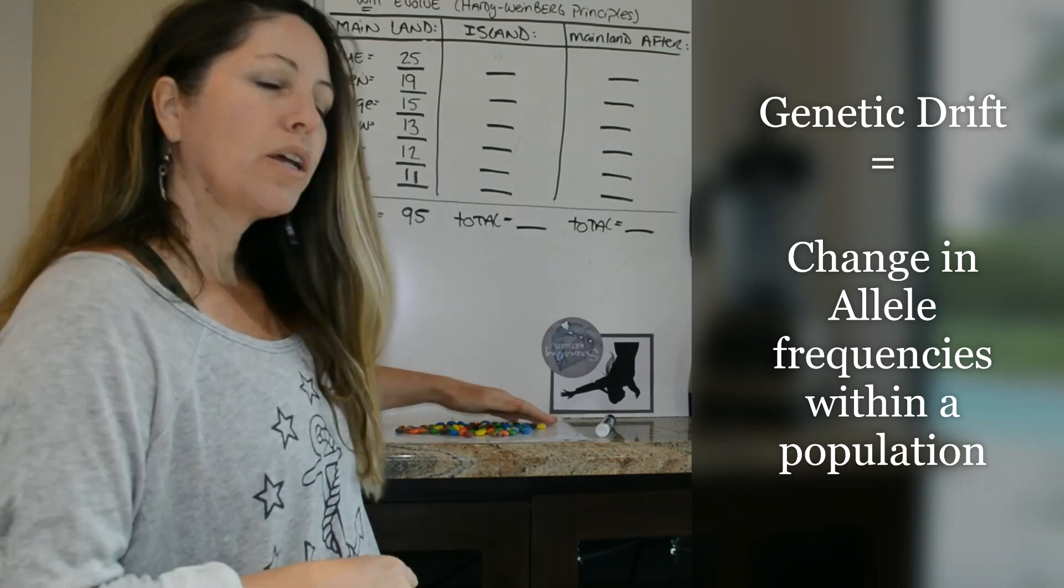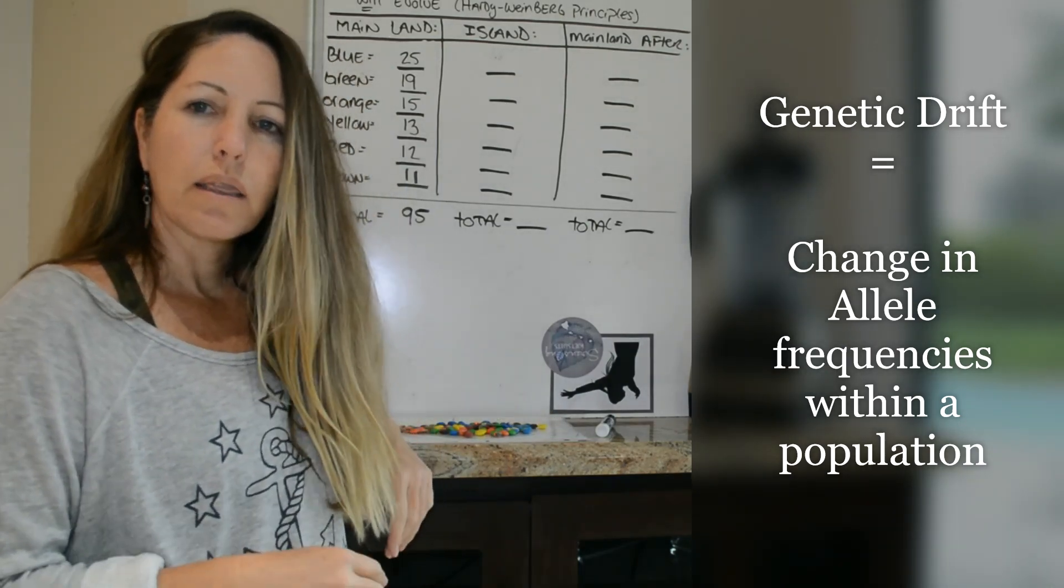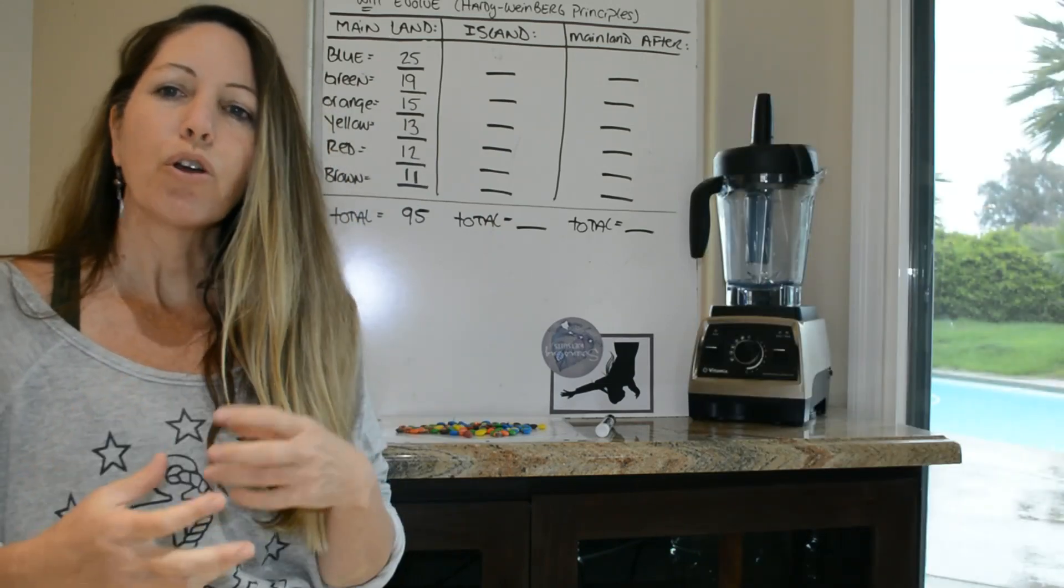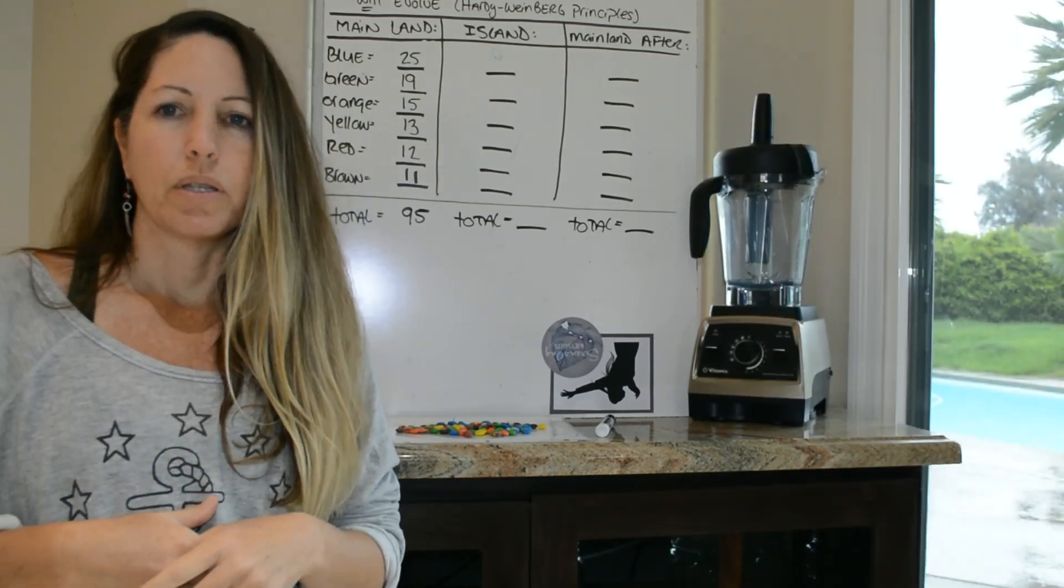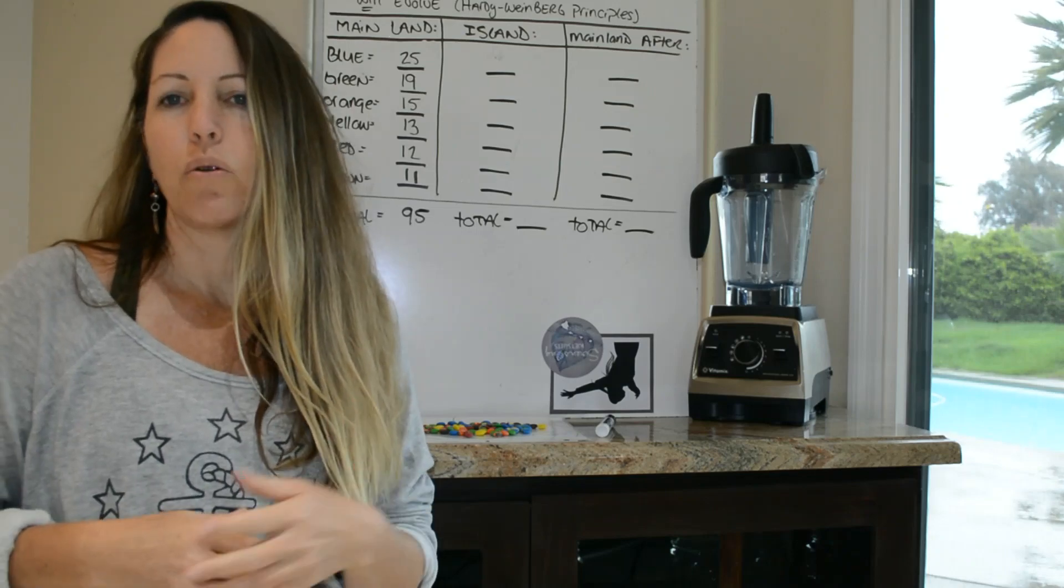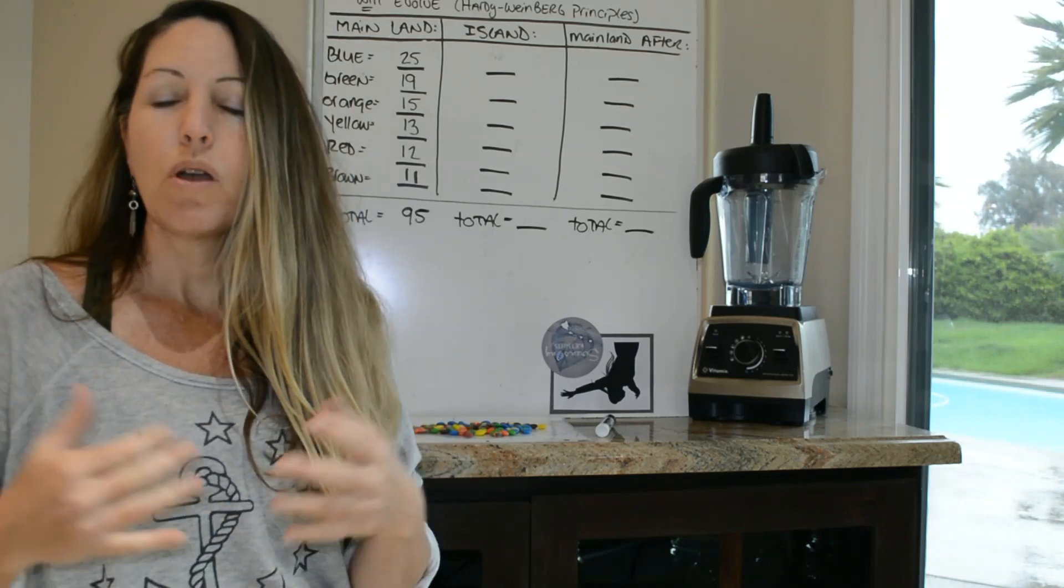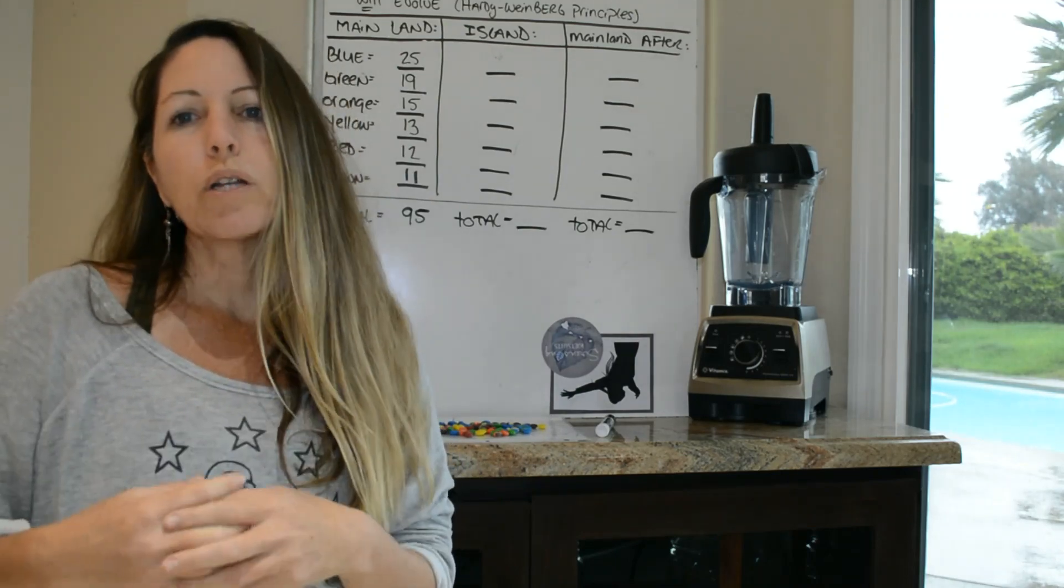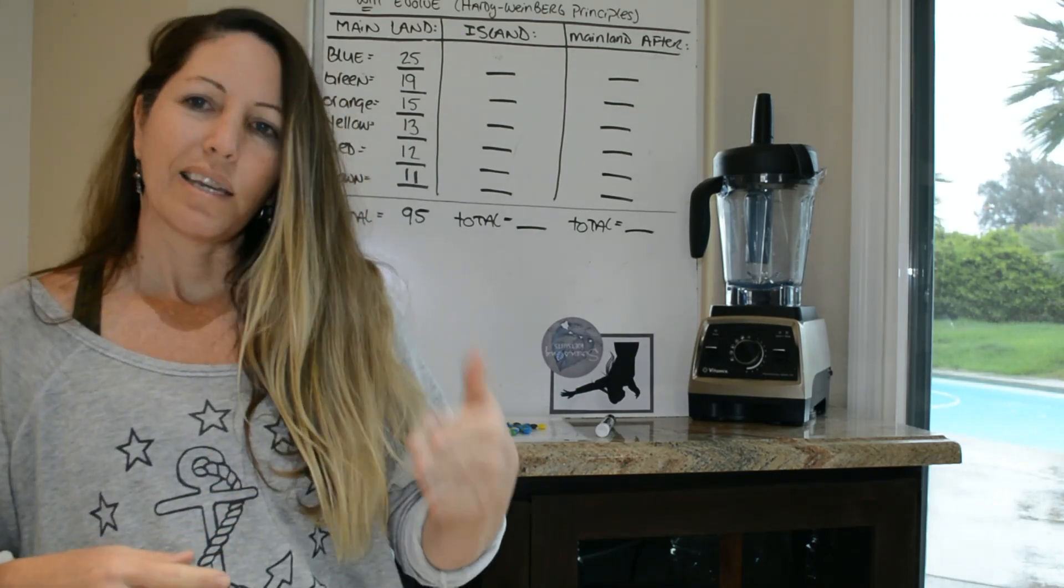Okay, so genetic drift, keep in mind, is the change of allele frequencies in a population. So if per chance something happens to them, say a hurricane or a tsunami, a tornado comes over and per chance alters the original population, that is genetic drift.